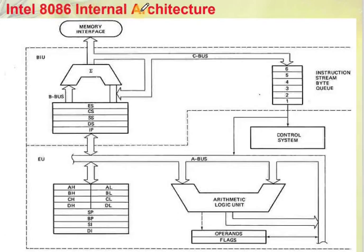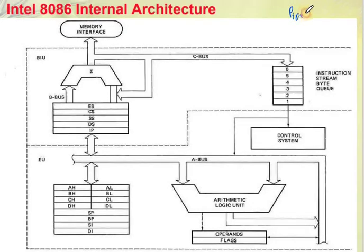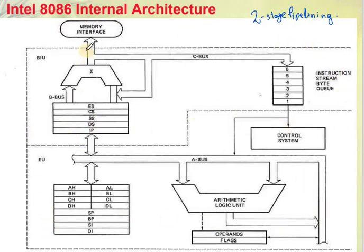This is the architecture diagram of the 8086 microprocessor. The 8086 supports two-stage pipelining. Its architecture is divided into two parts: the Bus Interface Unit (BIU) and the Execution Unit (EU).